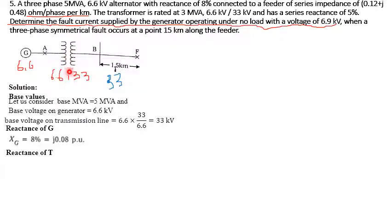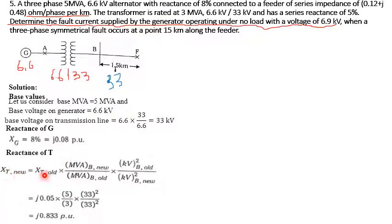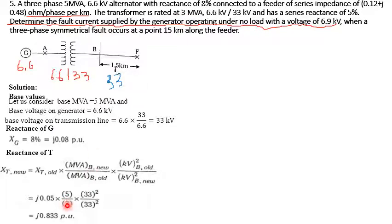For the transformer, using X_pu_new = X_pu_old × (MVA_base_new / MVA_base_old) × (kV_base_old / kV_base_new)²: the transformer reactance is 5%, so 0.05 × (5 / 3) × (33 / 33)² = 0.0833 per unit.